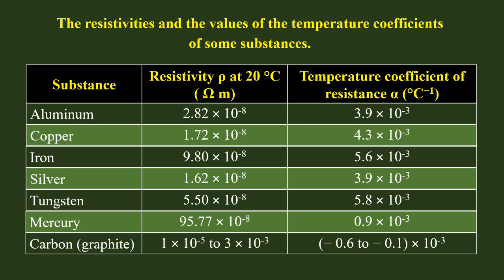If you look at the temperature coefficient of resistance, the negative value is a threat — you will see the negative slope on the graph. For carbon, the slope is negative, meaning resistance decreases as temperature increases.